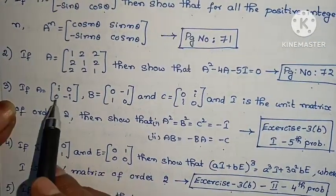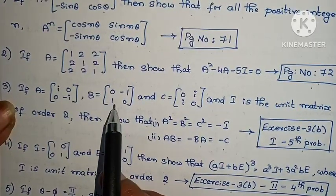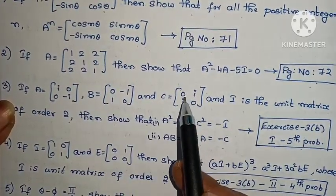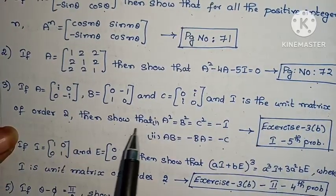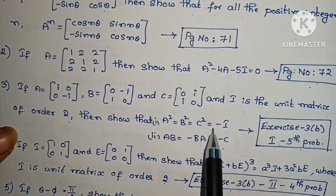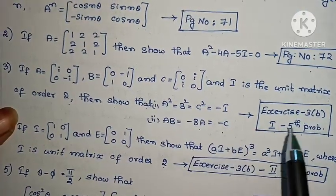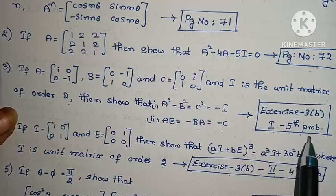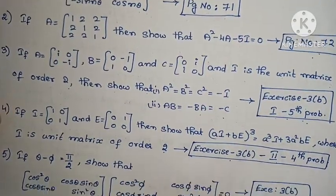Third one: if A equals to [i, 0; 0, -i], B equals to [0, -1; 1, 0], and C equals to [0, i; i, 0] and I is the unit matrix of order 2, then show that A² = B² = C² = -I. AB = -BA = -C. Exercise 3(b), first roman, fifth problem.